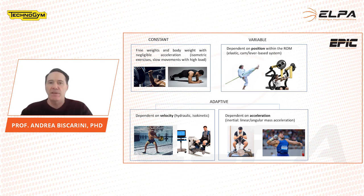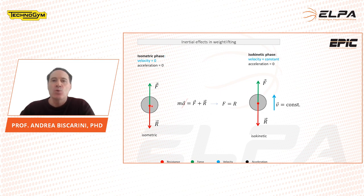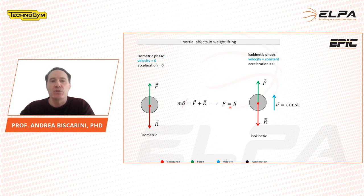To understand these effects, we will briefly examine the physics behind weightlifting. The second law of dynamics tells us that to maintain a free mass in a fixed position, like in an isometric exercise, we have to apply a vertical upward-directed force equal in magnitude to the weight. If we want to lift the same mass along the vertical with constant velocity, we have to apply exactly the same force. This is because in both cases the acceleration is zero.